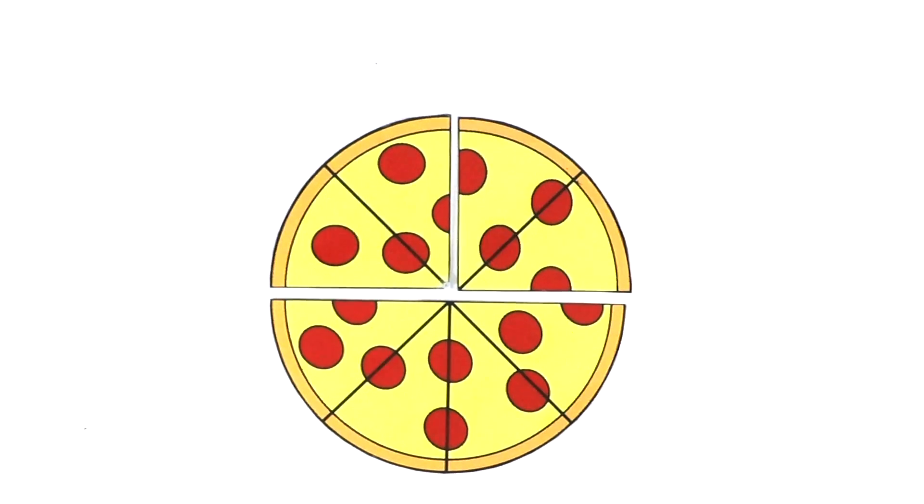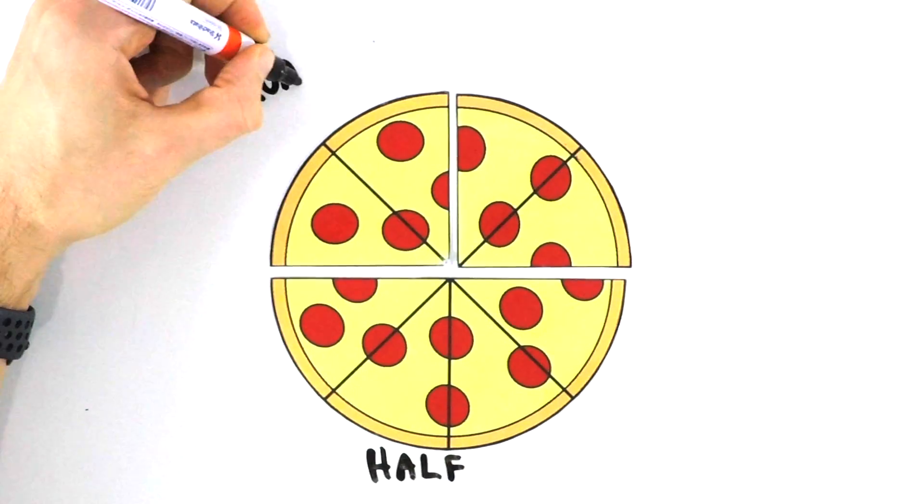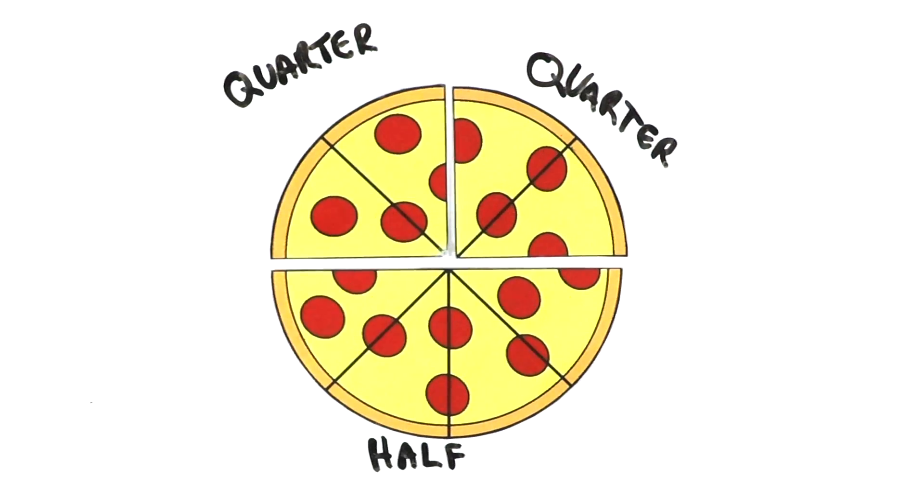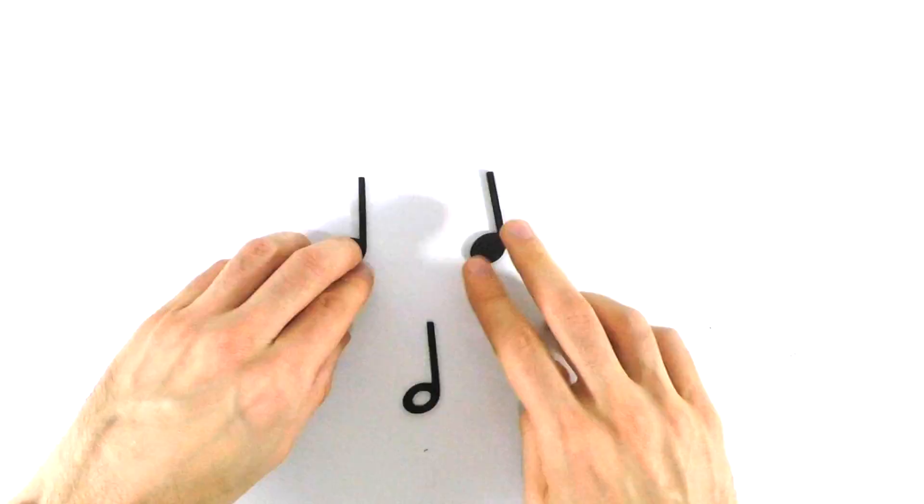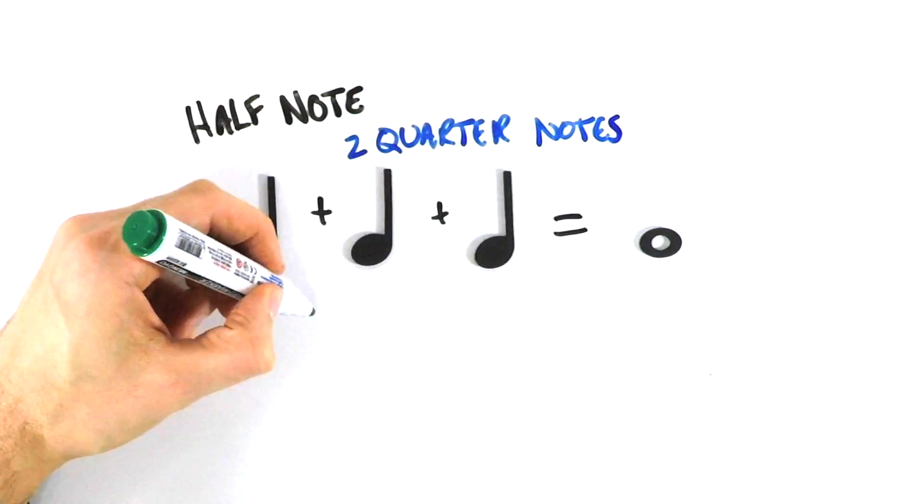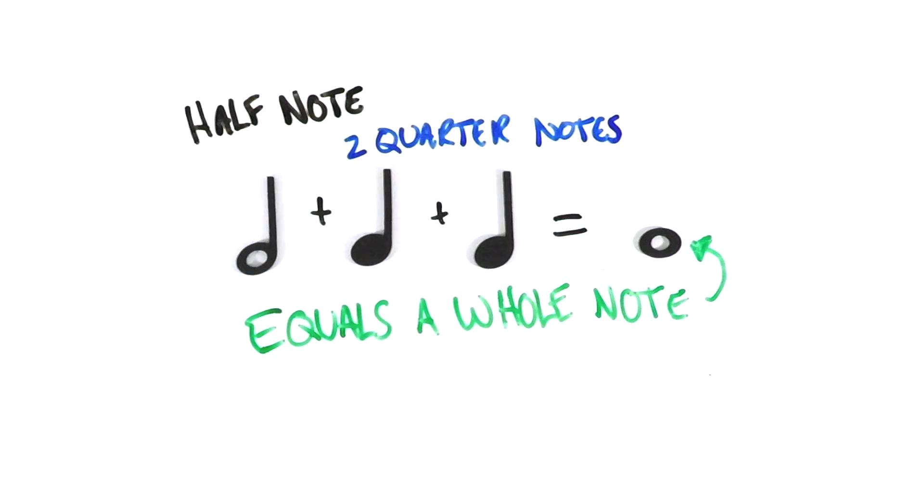Can you figure it out? If you said one half slice of pizza plus two quarters of a pizza, you would be correct. And the same would apply for our notes that we've learned. So our whole note can be broken up into a single half note and two quarter notes.